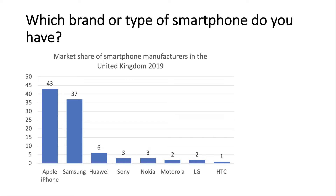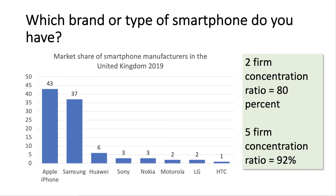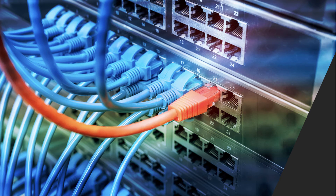Clearly it's a duopoly in the sense that the two largest firms in the market have 80 percent of the market, so the two-firm concentration ratio is 80 percent. If we then broaden the market out to take the next three biggest firms, we find the five-firm concentration ratio goes up to 92 percent.